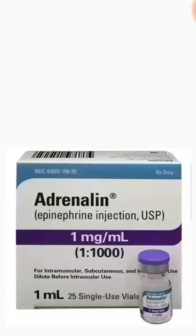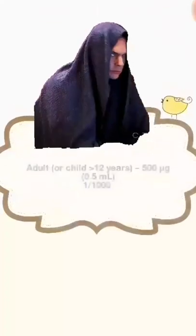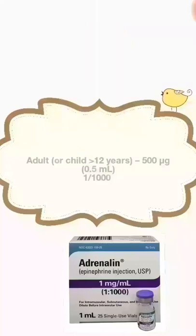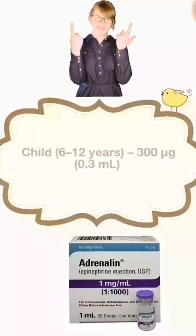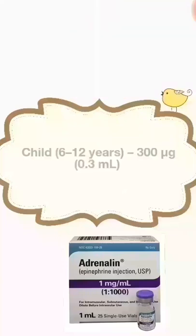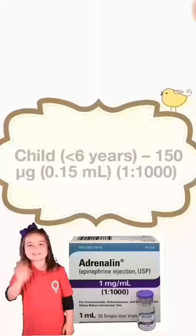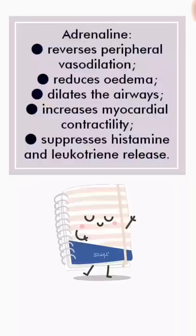The second product is the epinephrine ampoule. The dose depends on the age of the patient. For adults above 12 years old, give 0.5 mg of epinephrine with a concentration of 1 to 1000. For children aged 6 to 12 years, give 0.3 mg of epinephrine. For children less than 6 years, give 0.1 mg of epinephrine with a concentration of 1 to 1000.